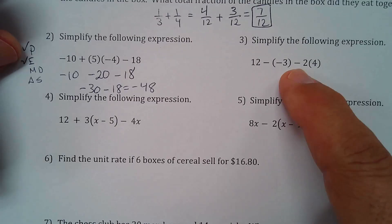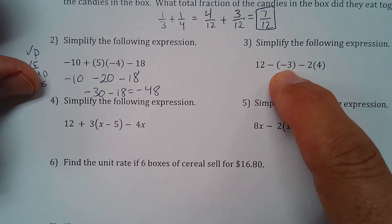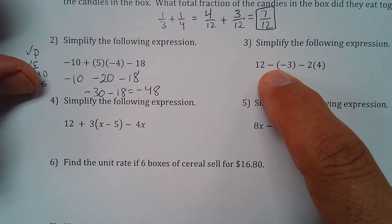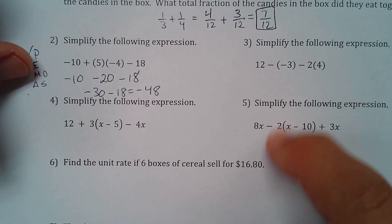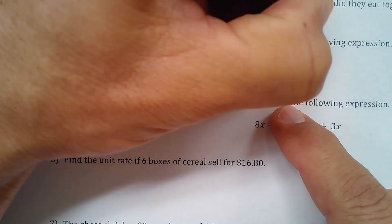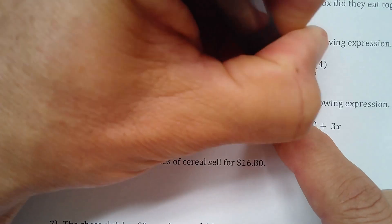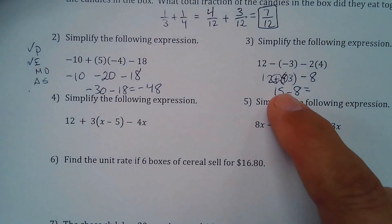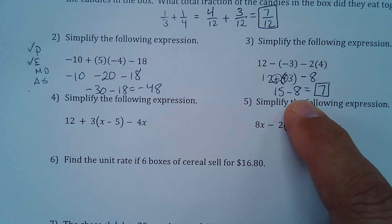All right. Simplifying this one. Again, with the order of operations, that PEMDAS. And we do have parentheses here, but that is just to separate negative 3 from the operation of subtraction. And that's 2 times negative 4. So I'm going to multiply first because that's what's first on here. And 2 times negative 4 is 8. So that's 12 minus negative 3 minus 8. A positive P-nut can happen right here. Positive 12 plus 3 is 15 minus 8. That is 15 minus 8 is 7.